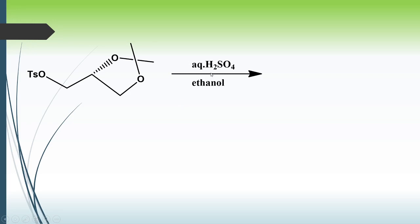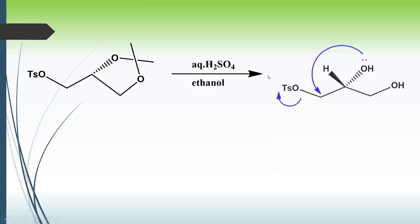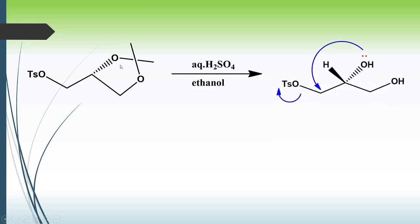In the next step we use aqueous H₂SO₄ in the presence of ethanol. Here we have a protected diol, and when we use aqueous H₂SO₄/EtOH on the protected diol, there is deprotection and we get the separate OH and OH groups.